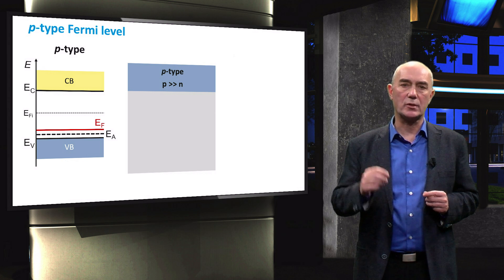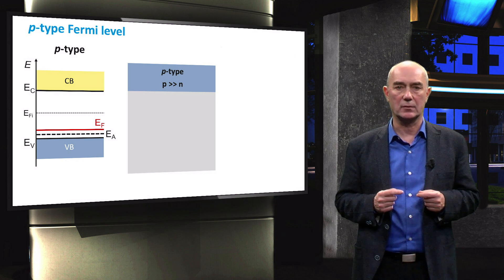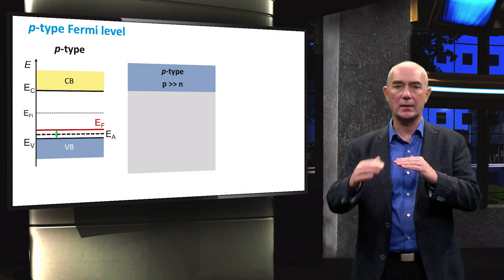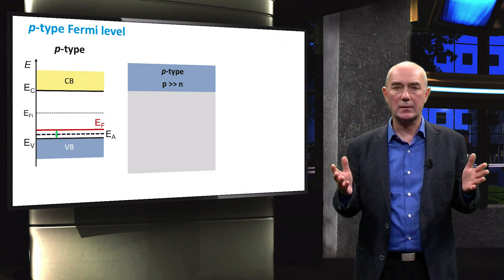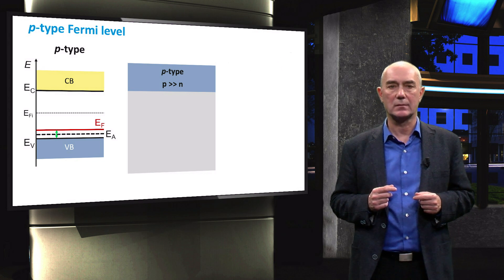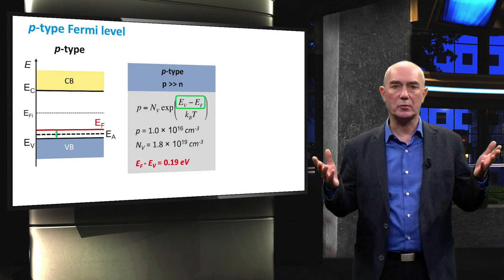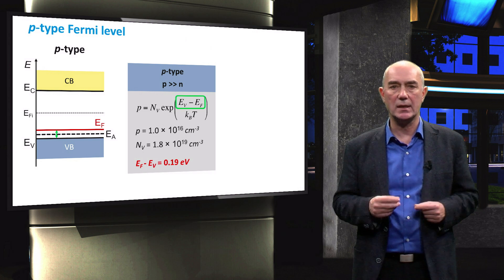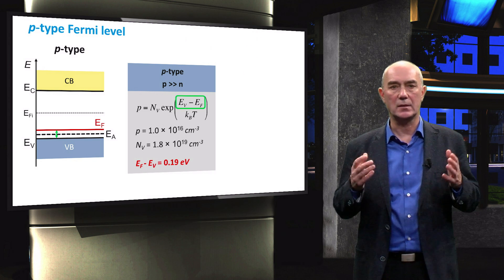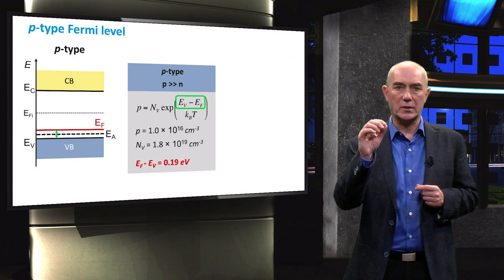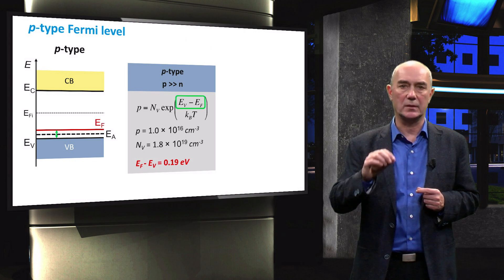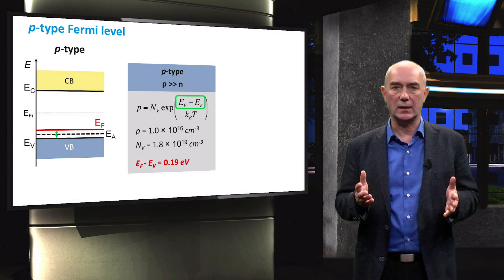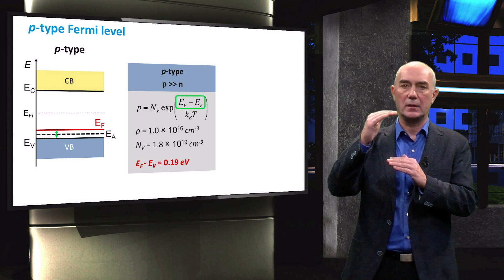We can use the same process to solve the Fermi level position in a P-type semiconductor. This time we are interested in the distance between the edge of the valence band and the Fermi level, and we expect the Fermi level to be close to the valence band. Using the relationship for hole concentration, in which the effective density of states in the valence band Nv is present, the Fermi level position with respect to the valence band edge is +0.19 electron volts, meaning the Fermi level is above the valence band.